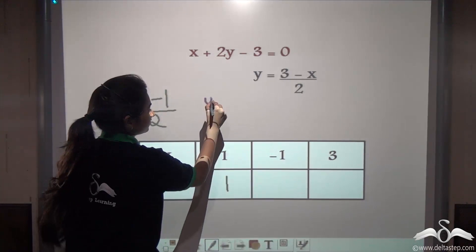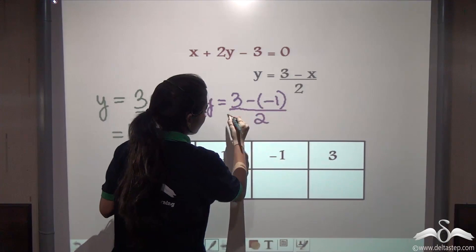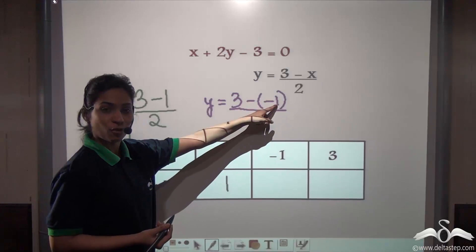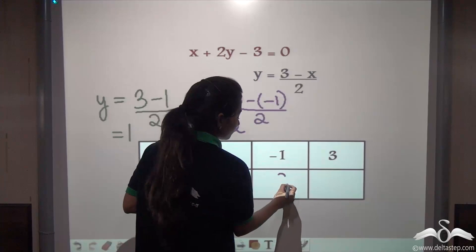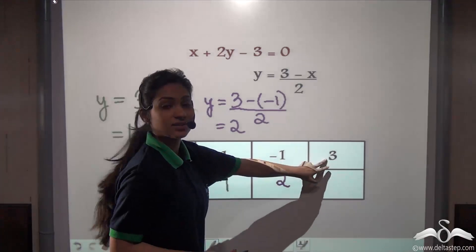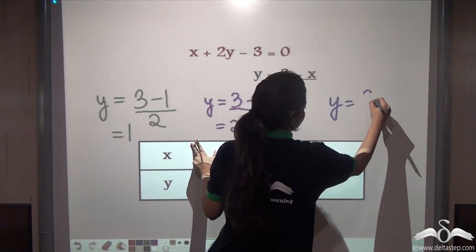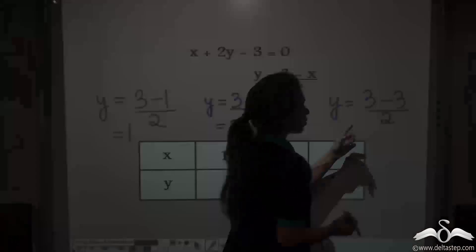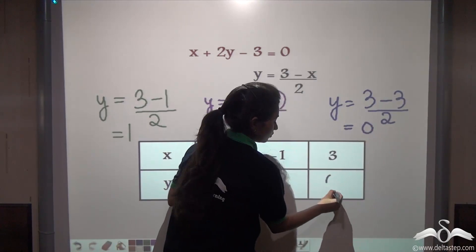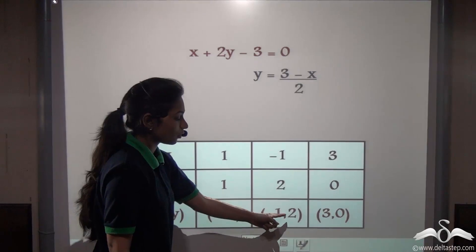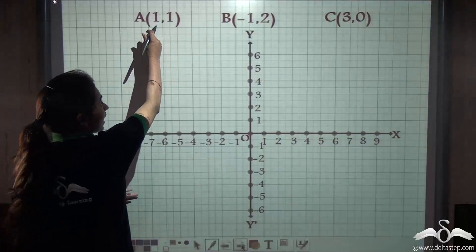Let us put minus 1 in the place of x. 3 minus minus 1, that is 3 plus 1 is 4, and 4 by 2 is 2. So when x is minus 1, y is 2 for this equation. Similarly, if x is 3, then 3 minus 3 is 0 and 0 by 2 gives you 0. So we have got our coordinates: (1, 1), (−1, 2), and (3, 0). We have named these coordinates A, B, and C.